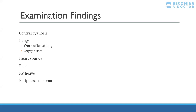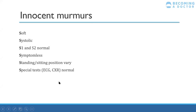Innocent murmurs — a friend of mine has one, which sounds like an ejection systolic murmur: heart sounds 1 and 2 plus ESM. They're quite soft, usually asymptomatic, and you'll hear it on auscultation varying with position. There's nothing really to do about it — you don't need to interfere. Many people live with innocent murmurs.